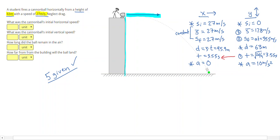So answering the questions on the left side, what was the cannonball's initial horizontal speed? That was given to us as 27 meters per second. The initial vertical speed was zero, because the cannonball was not moving upwards or downwards when it was launched. The ball remained in the air. How long did the ball remain in the air is asking us for time, which is 3.55 seconds. And how far from the building will the ball land? Well, that is going to be measured along the ground. So from the building to the ball's landing, that is going to be my horizontal distance of 95.9 meters.